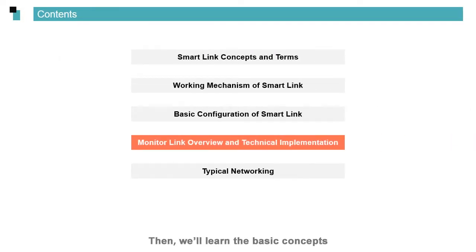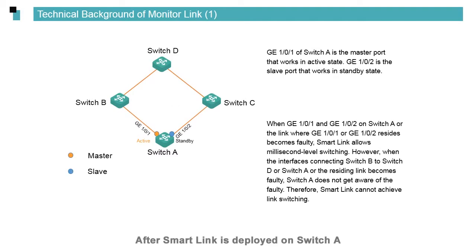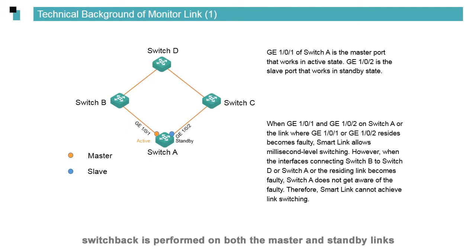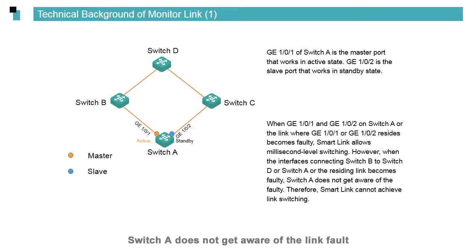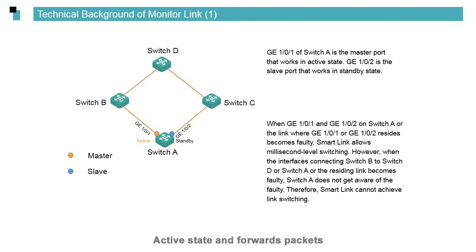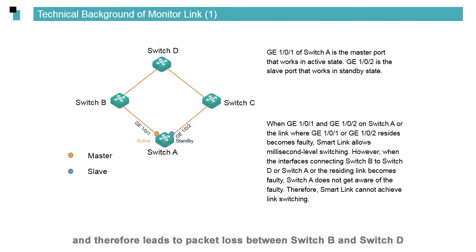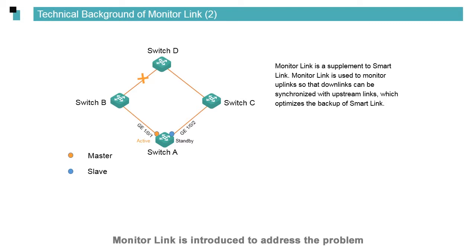We'll learn the basic concepts and technical implementation of monitor link. After smart link is deployed on switch A and the master link directly connected to switch A is faulty, switchback is performed on both master and standby links. When the link between switch B and switch D becomes faulty, switch A does not get aware of the link fault. The master port of switch A still works in active state and forwards packets, which does not trigger switching between master and backup links and therefore leads to packet loss between switch B and switch D. Monitor link is introduced to address this problem.